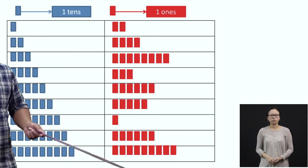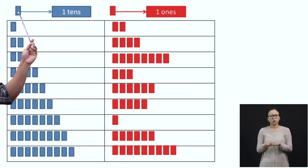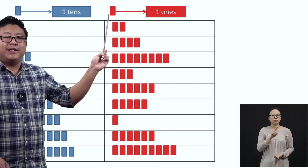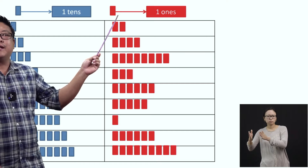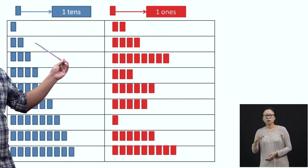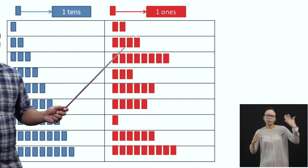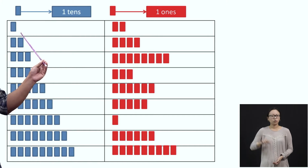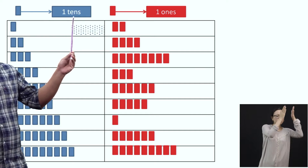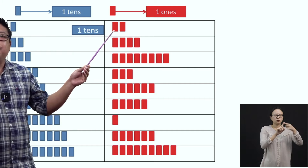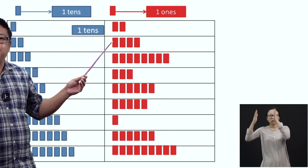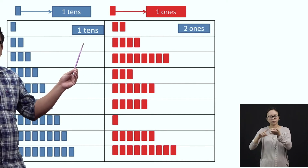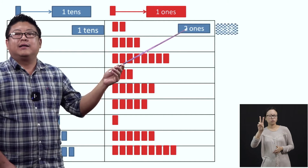Let us look at the next picture and go through this example. Here, we have one blue strip — this blue strip represents one-tenth. And one red strip represents one-ones. So, by looking at this picture, we will try to write the numbers corresponding to these pictures. One blue strip is equal to one-tenth, and here we have two red strips, so we will call it as two ones. Together, when we combine one and two, we get twelve.